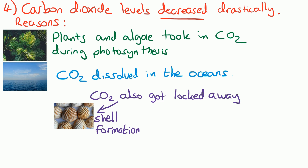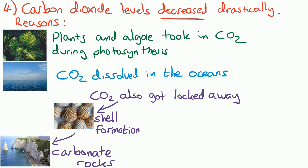Shells are made from calcium carbonate, and then when those shells fell on the seabed, over hundreds of thousands of years they got compressed and turned into carbonate rocks like limestone. So the carbon dioxide from the air first got locked away in the shells, and then as that turned into carbonate rocks it further got locked away and taken out of the atmosphere.